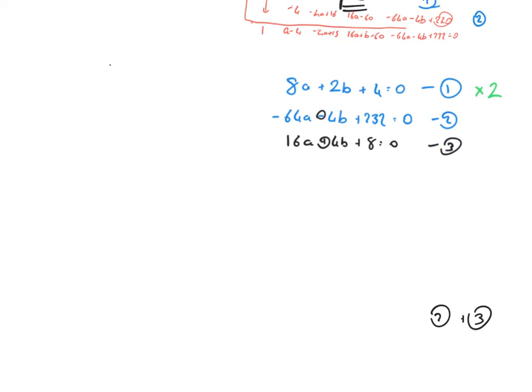Okay, so minus 64a plus 16a is minus 48a. b will cancel out. 232 plus 8 is 240. That's equal to 0. Bring that over. Minus 48a is equal to minus 240, a is equal to minus 240 divided by minus 48. And then the two negatives cancel out, and 240 divided by 48 is 5, so a equals 5.